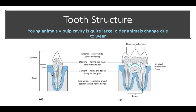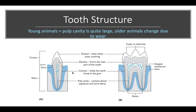Looking at tooth anatomy: the crown is the top part of the tooth. The root is the part below the gums, below the gingiva. Enamel is the shiny white outer covering. Dentin forms the main part of the tooth. Cementum holds the tooth firmly in the gum. The pulp cavity contains blood capillaries and nerve fibers.